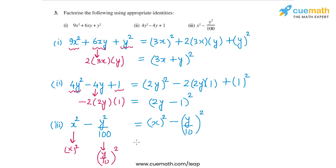So this will get factored as a plus b, a minus b, or x plus y by 10 times x minus y by 10. This is the factored form of the third expression. So that completes question number 3.